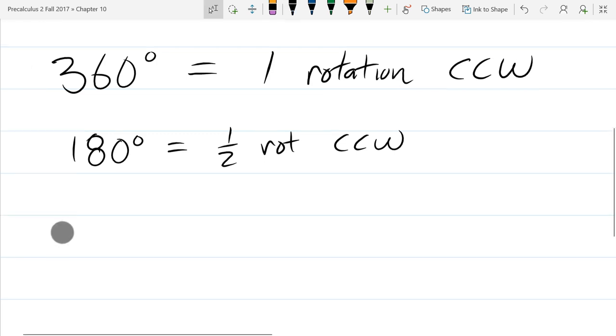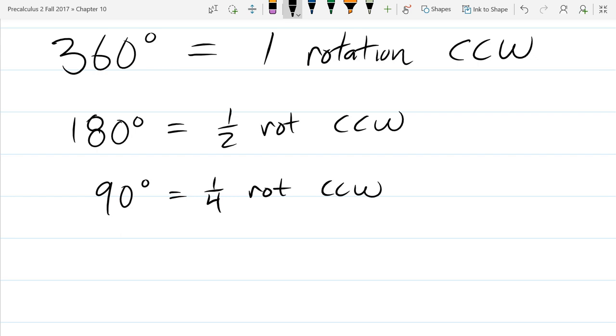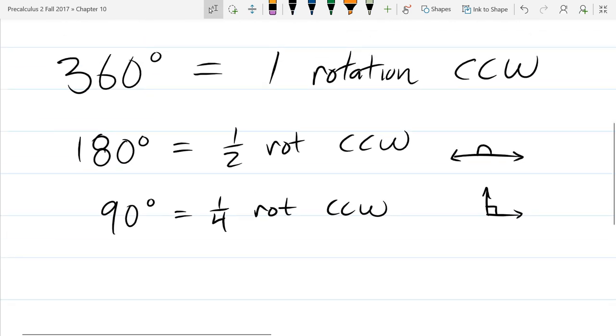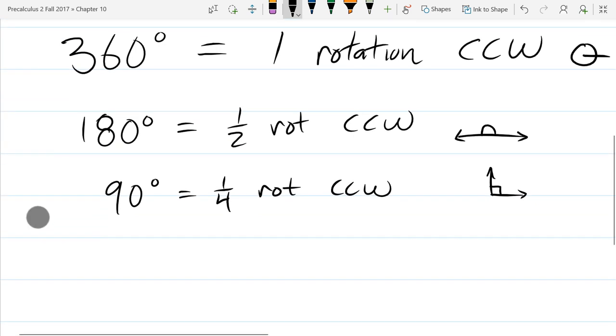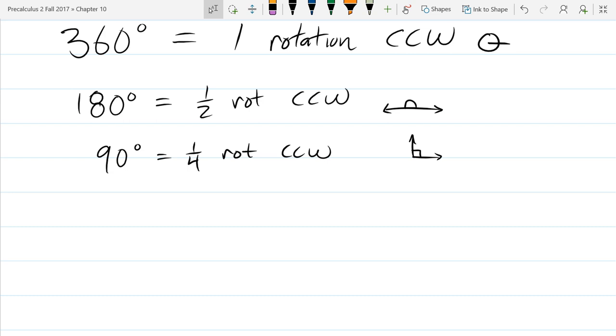What's another famous angle in degrees? 90. And we can get that either by multiplying the 180 degree equation by a half or multiplying the 360 by a quarter. And this is one quarter rotation counterclockwise. This is such a special angle, it gets its own symbol. We use a square instead of a quarter circle. The 180 degree angle kind of looks like a hat. Full rotation is kind of silly to draw, it would just be a circle.